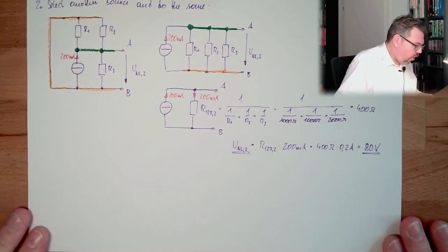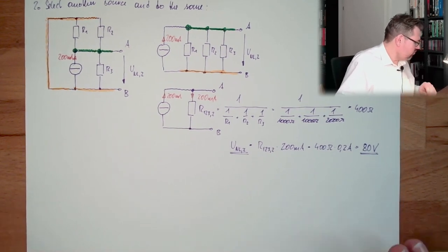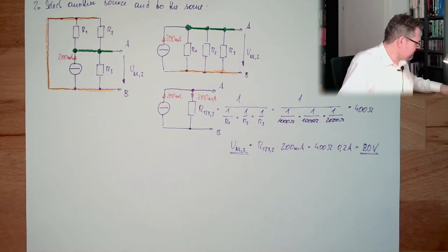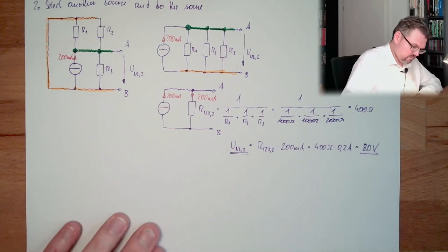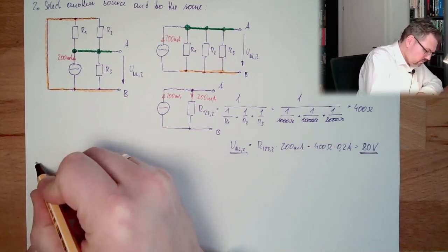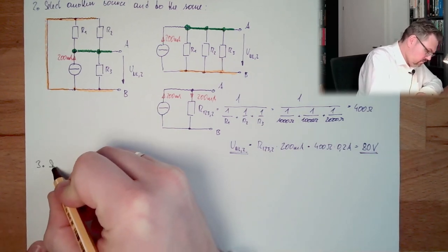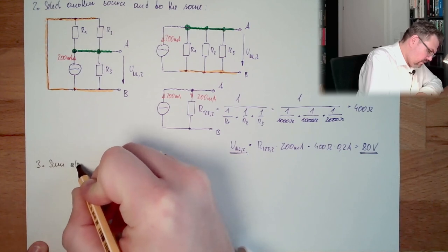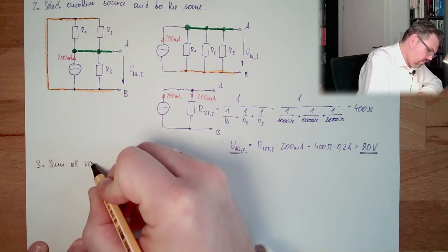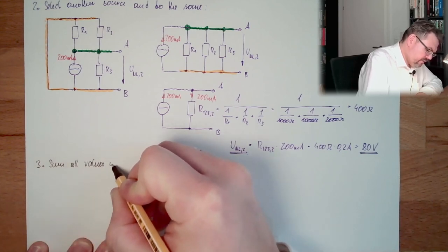So here we have also 200 milliamps, because here is nothing going out. So we have here, this is still the no load voltage. U no load 2 equals 80 volts.